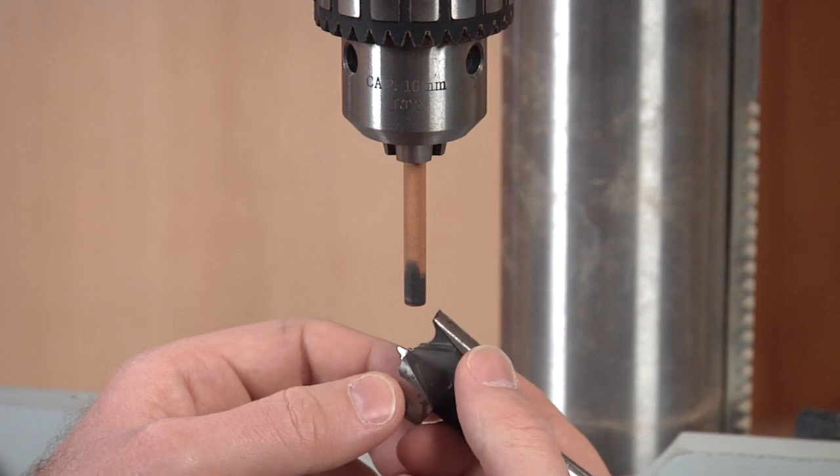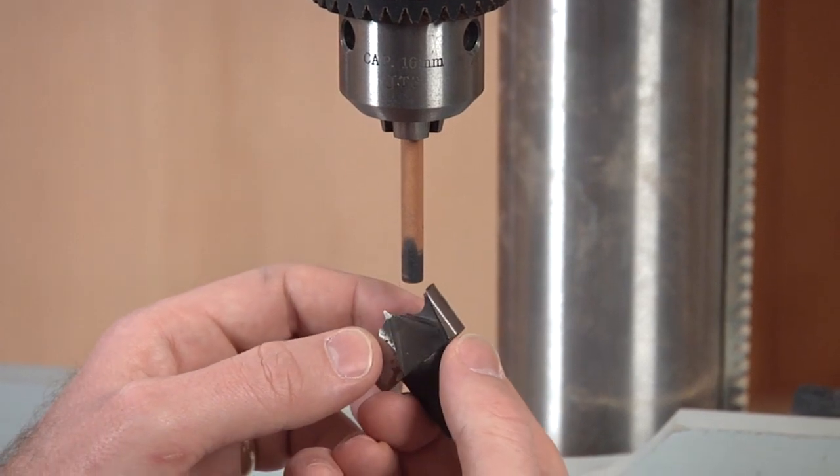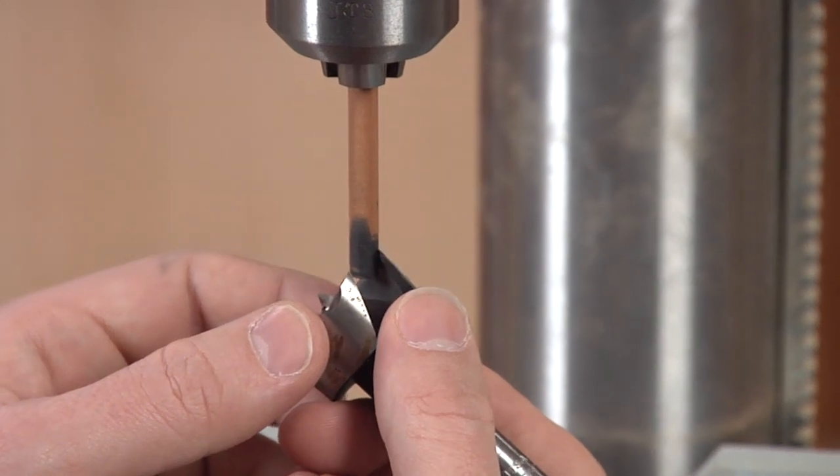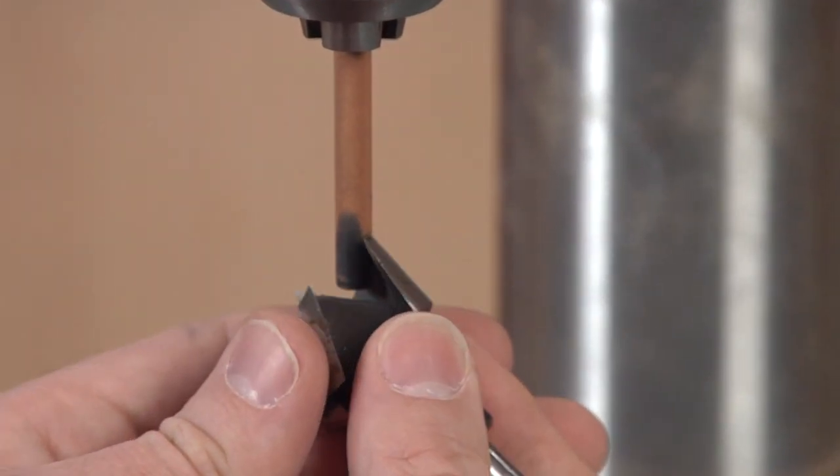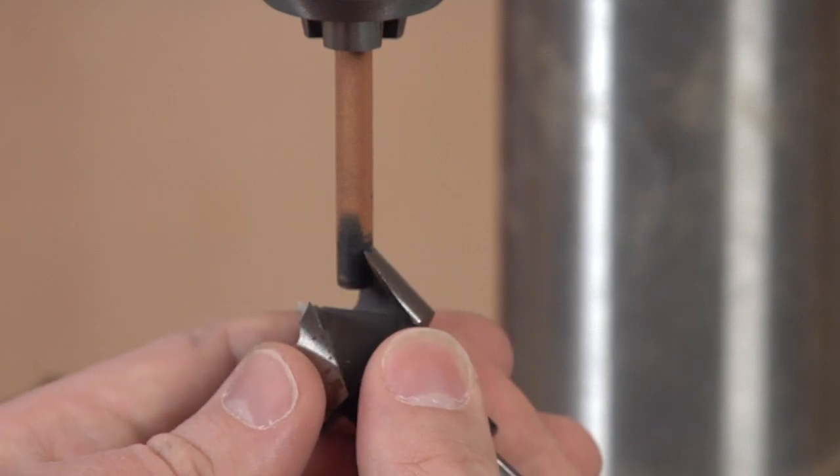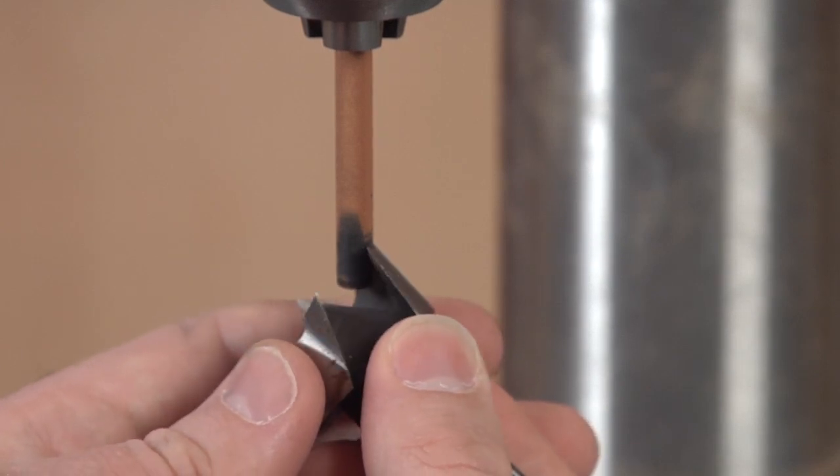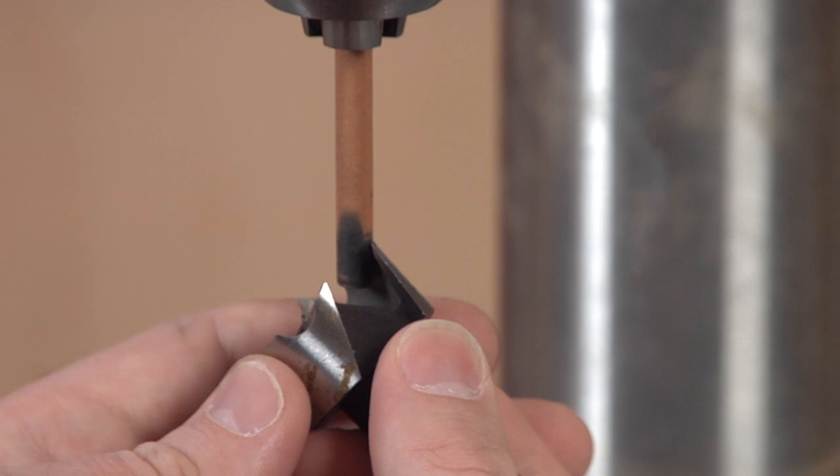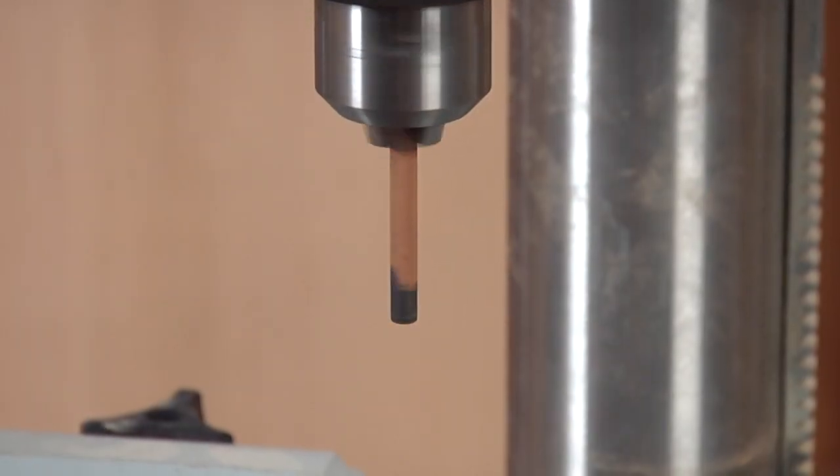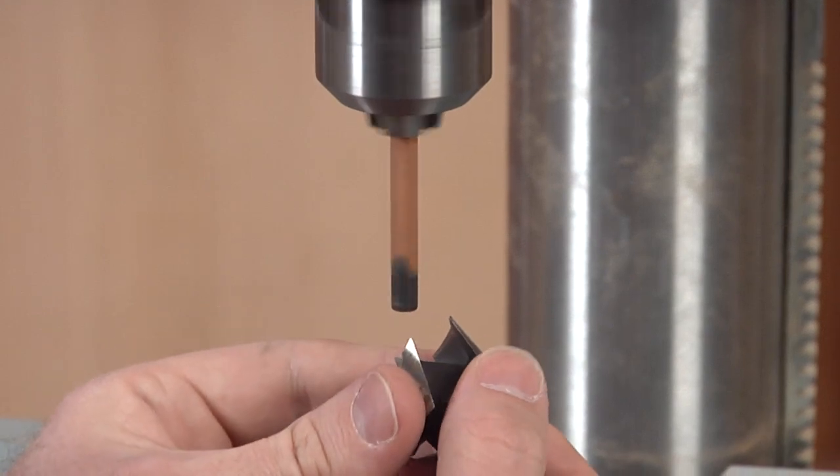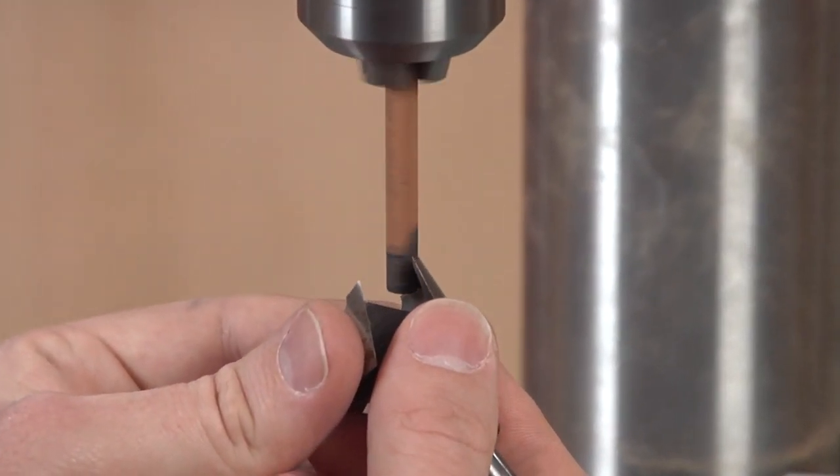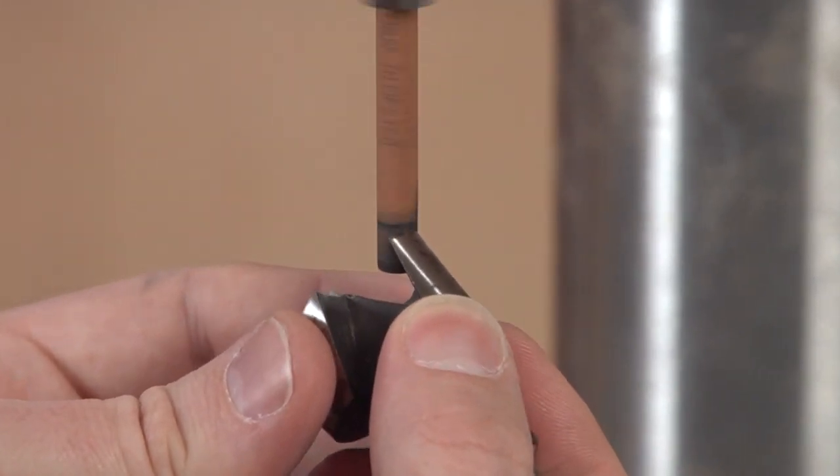Now you want to practice the motion you're going to use before you turn on the drill press. So basically what you're looking for is match the angle of that rim, and rotate it through like so. So I have the drill press set on the lowest speed, and we're just going to rock that through the motion we practiced.